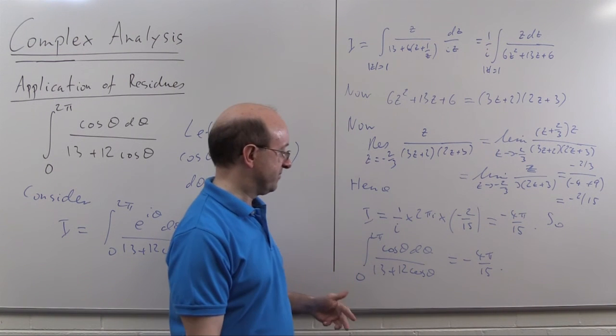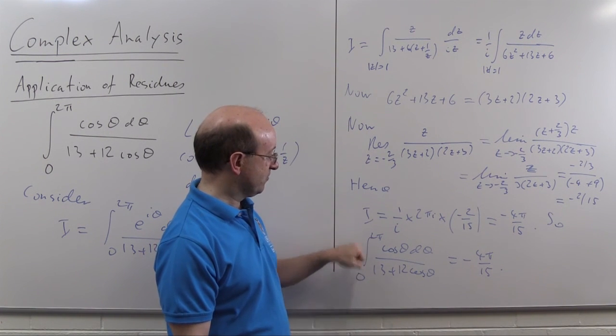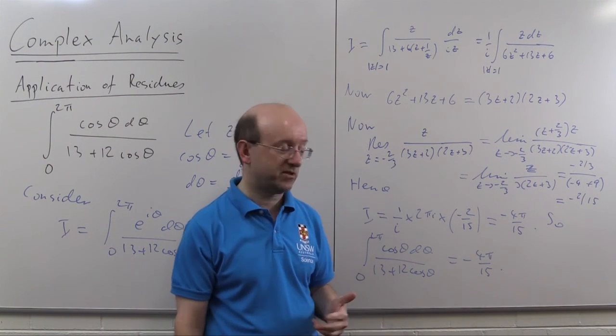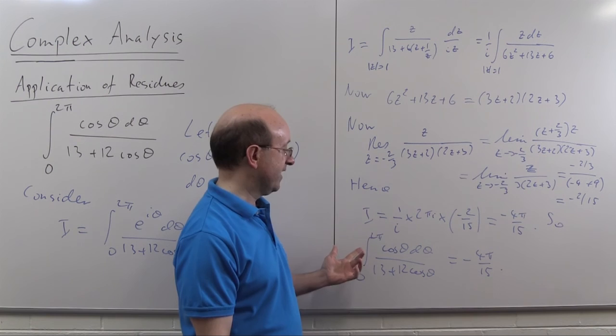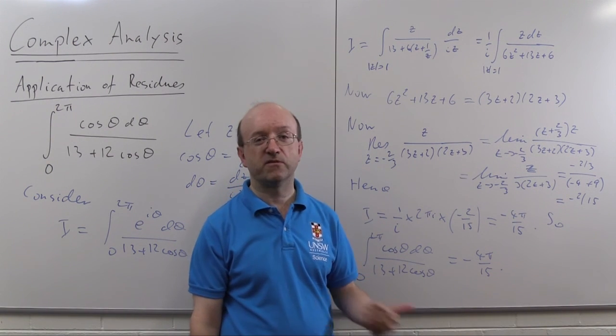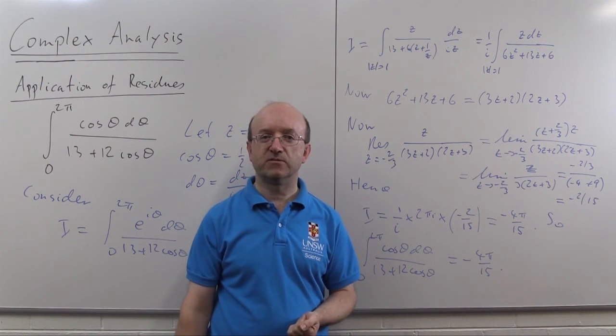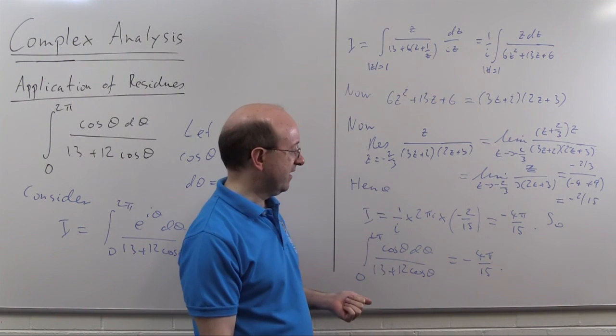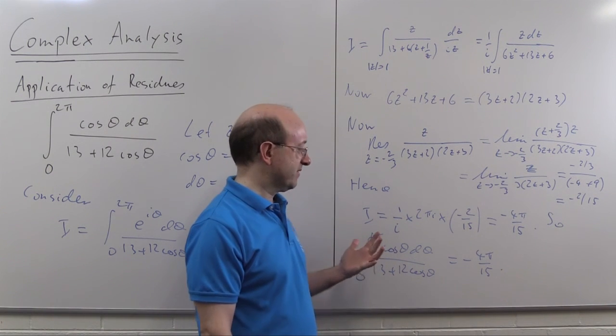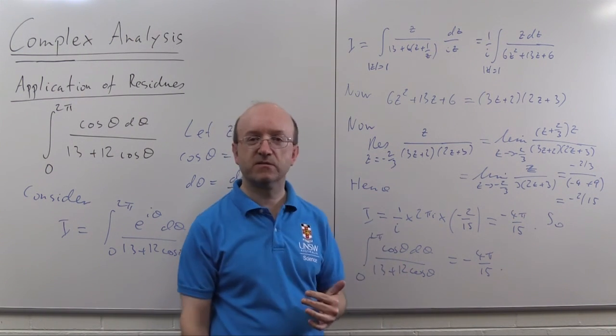In fact that's pretty obvious. This integral will be the same as integral from minus pi to pi, sin theta over 13 plus 12 cos theta. The sin theta one would be anyway, and sin theta over 13 plus 12 cos theta is an odd function, so naturally its integral from minus pi to pi is 0.